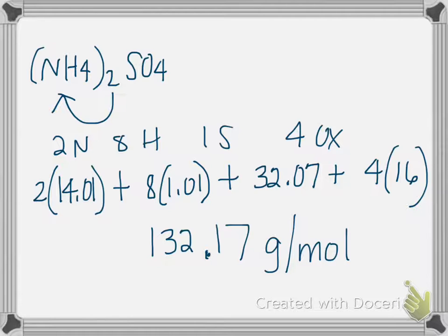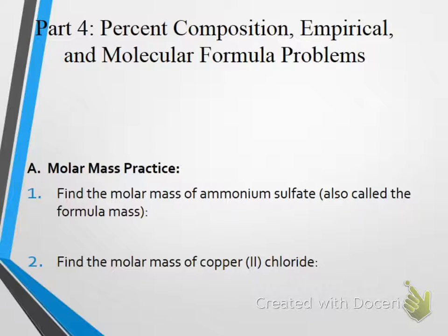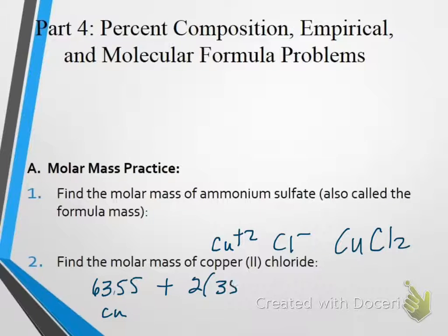So let's do the other example. So copper(II) chloride, we can actually do that one right here on the screen because it's short. Copper(II) chloride, remember that 2 is saying that we have a plus two for copper. Chloride is a negative 1, so our formula would be CuCl2. So copper is 63.55 plus 2 times 35.45 for chlorine. And I get 134.45 grams per mole.